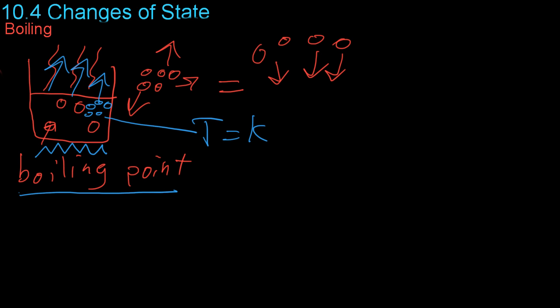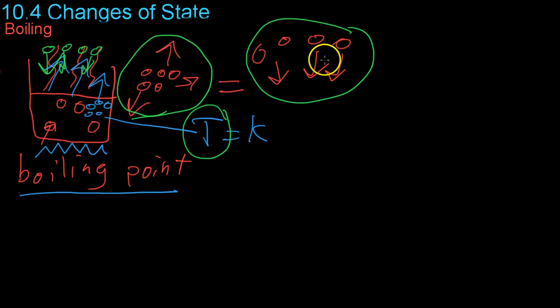However, you can change this temperature at which the boiling point occurs by changing the pressure above the liquid. And this is because the boiling point is simply when the vaporization pressure equals the atmospheric pressure. So if you lower the atmospheric pressure, then the vaporization pressure can also be lower and that will allow things to boil away easier.